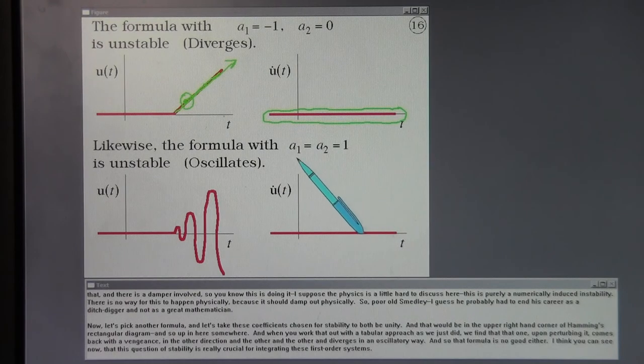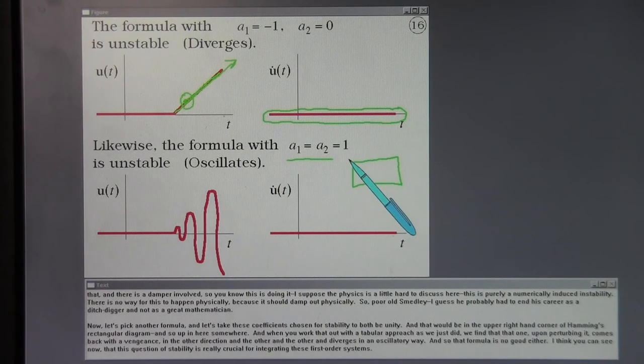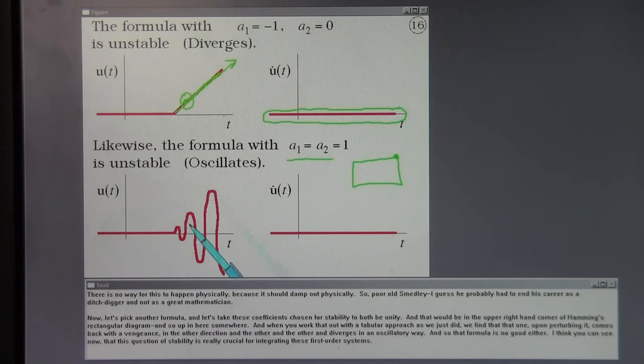Now, let's pick another formula and let's take these coefficients chosen for stability to both be unity. And that would be in the upper right-hand corner of Hamming's rectangular diagram. And when you work that out with a tabular approach as we just did, we find that that one, upon perturbing it, comes back with a vengeance in the other direction, and diverges in an oscillatory way. And so that formula is no good either. I think you can see now that this question of stability is really crucial for integrating these first-order systems.